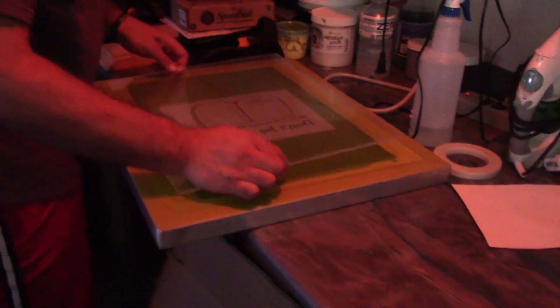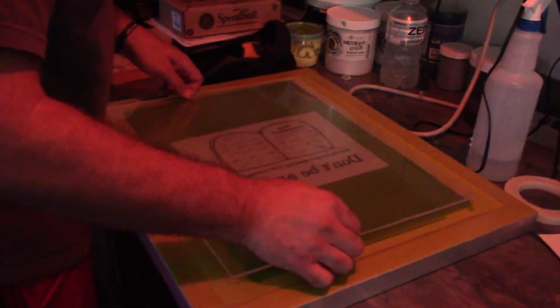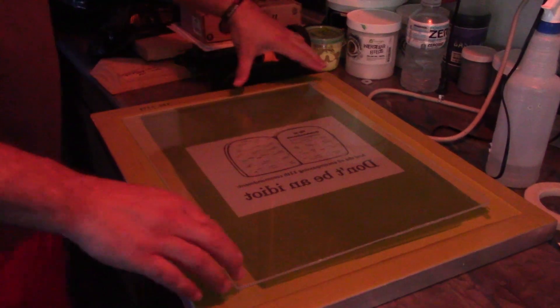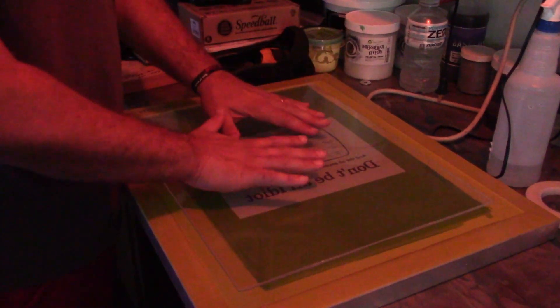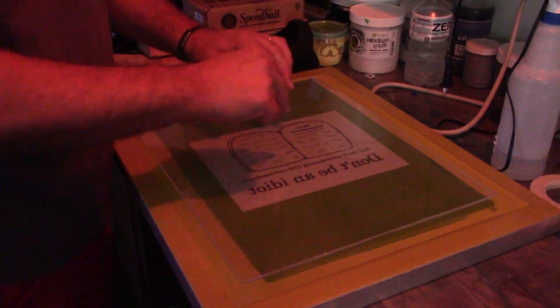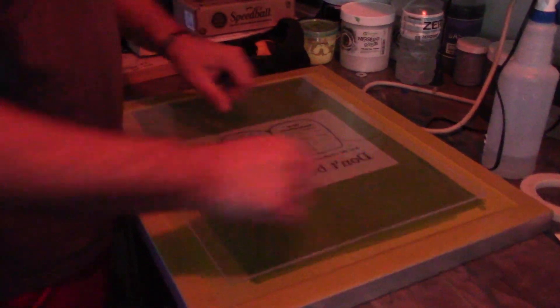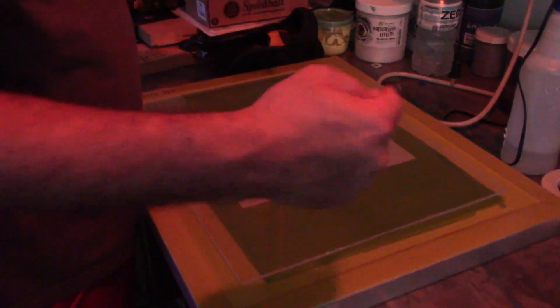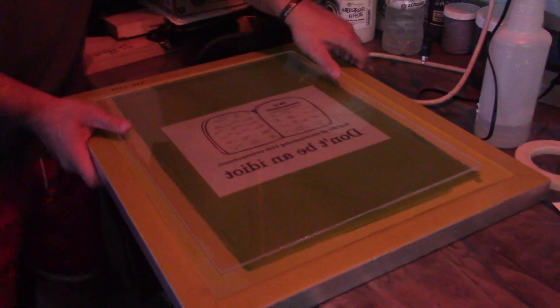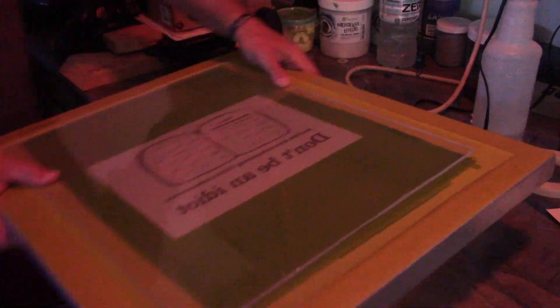So I'm going to put this piece over. This is just plexiglass. I usually like to use glass. You want to weigh it down because you don't want any gap between the film and the emulsion, because any light that gets in there will ruin the sensor.